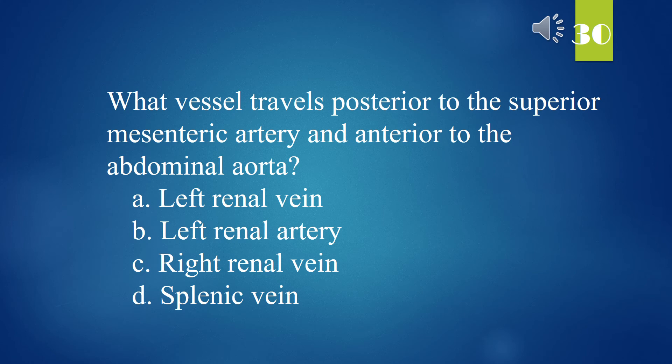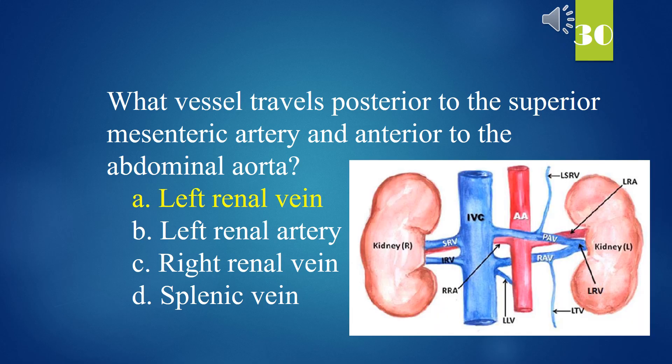What vessel travels posterior to the superior mesenteric artery and anterior to the abdominal aorta? A. Left renal vein. B. Left renal artery. C. Right renal vein. D. Splenic vein. The answer is A. Left renal vein.